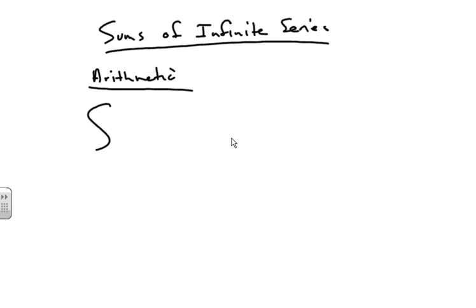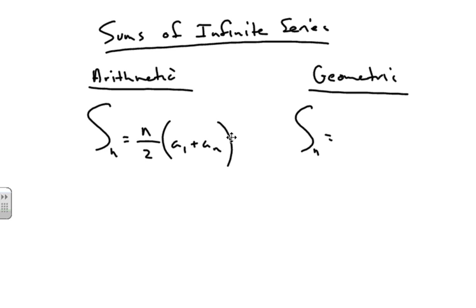We have an arithmetic formula. We have n going to infinity over 2, with the first term plus our last term. And then we have a geometric. When we talk about finding the sums of infinite series, we're going to be looking at it. We have the first term.